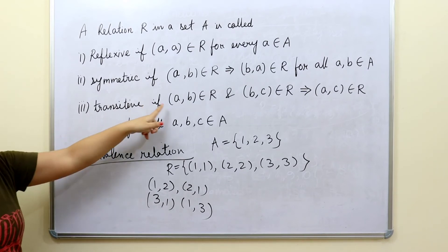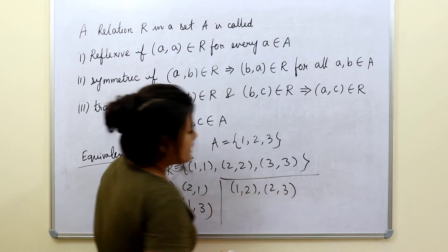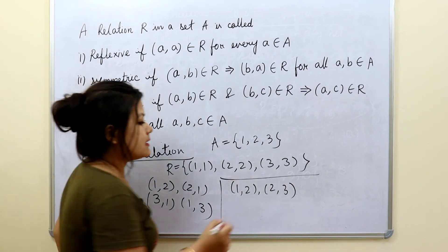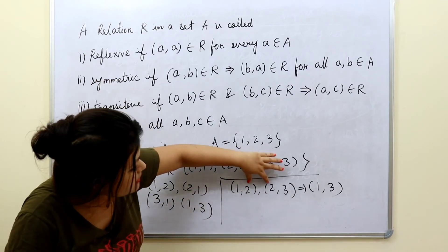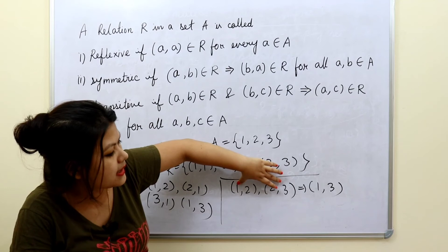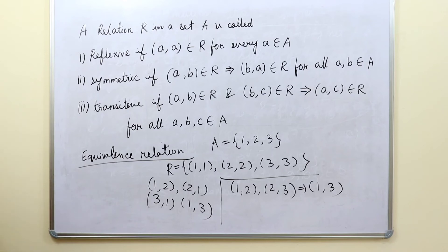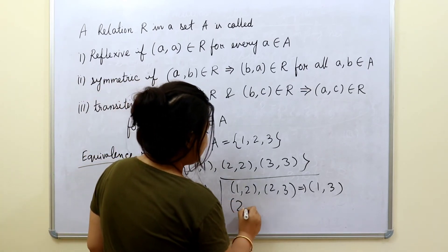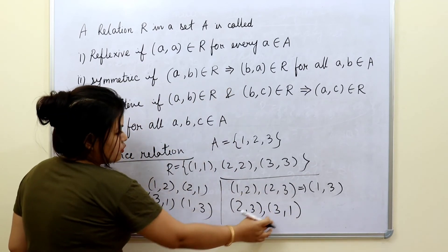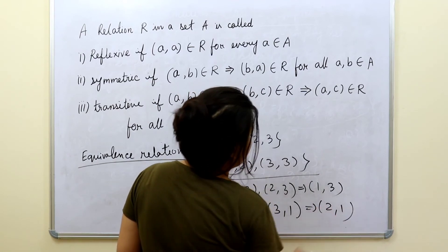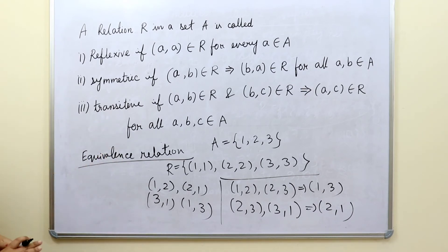For transitive relation: suppose (1,2) and (2,3) both belong to R. Then the middle value 2 is excluded and we take the extreme values, giving us (1,3), which must also be in R. Similarly, if (2,3) and (3,1) are in R, then excluding the middle value 3, we get (2,1), which must also be included. Only then will that relation be called transitive.